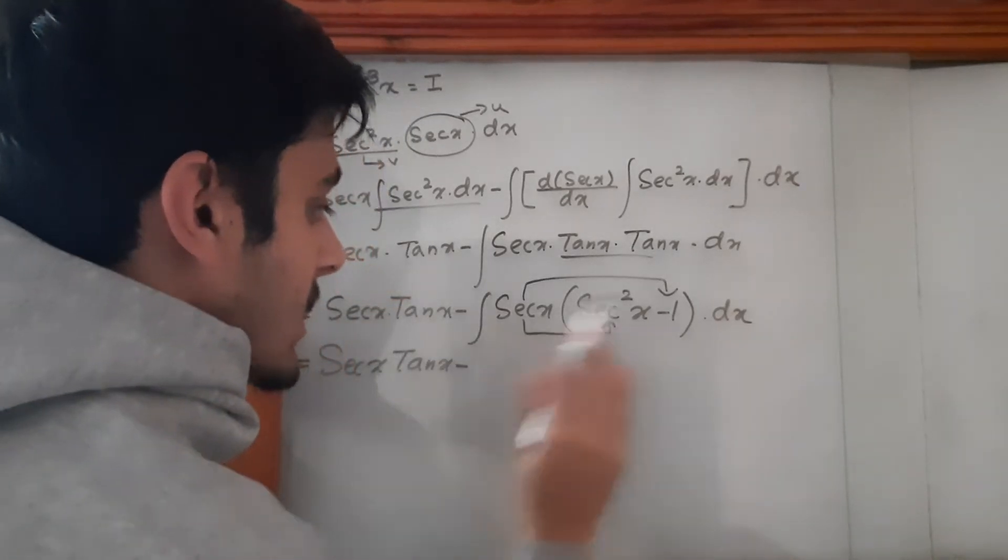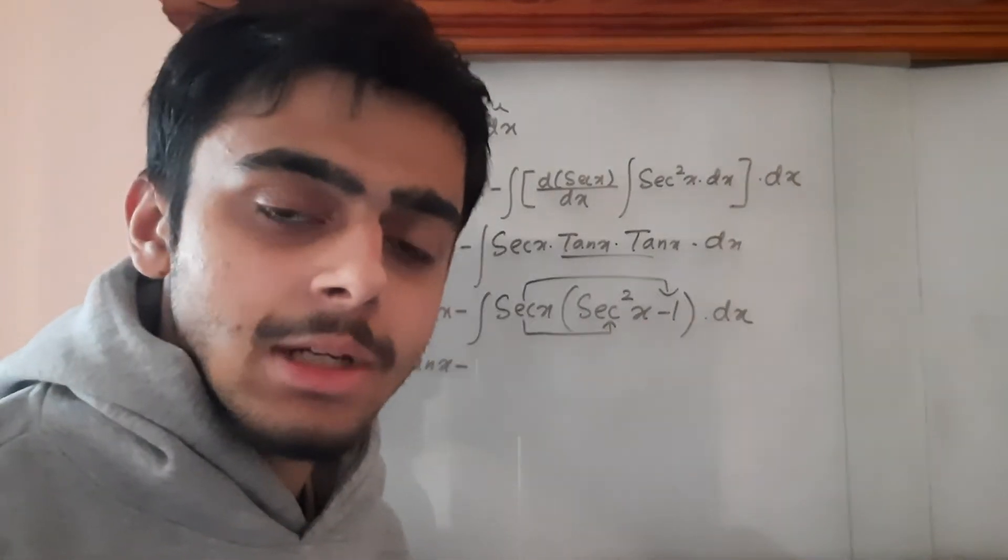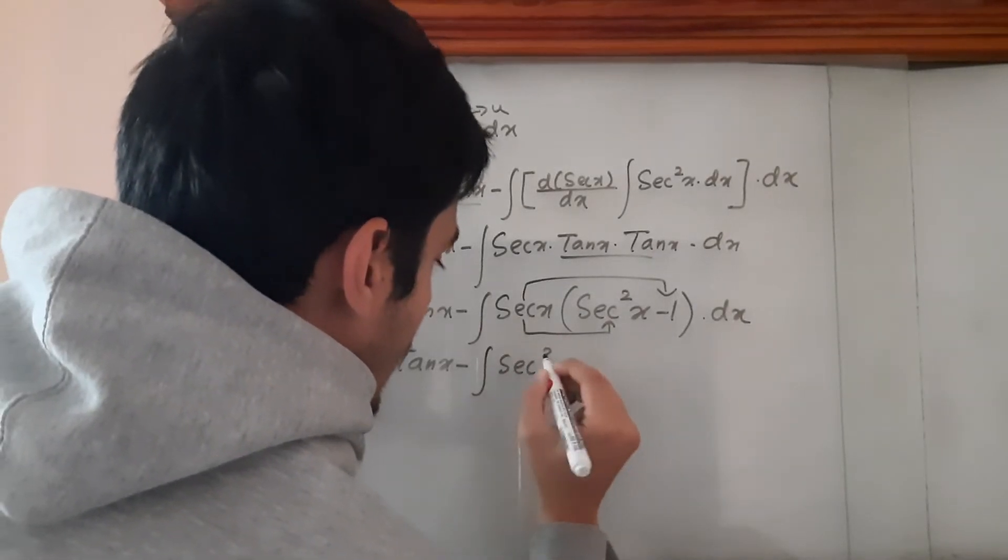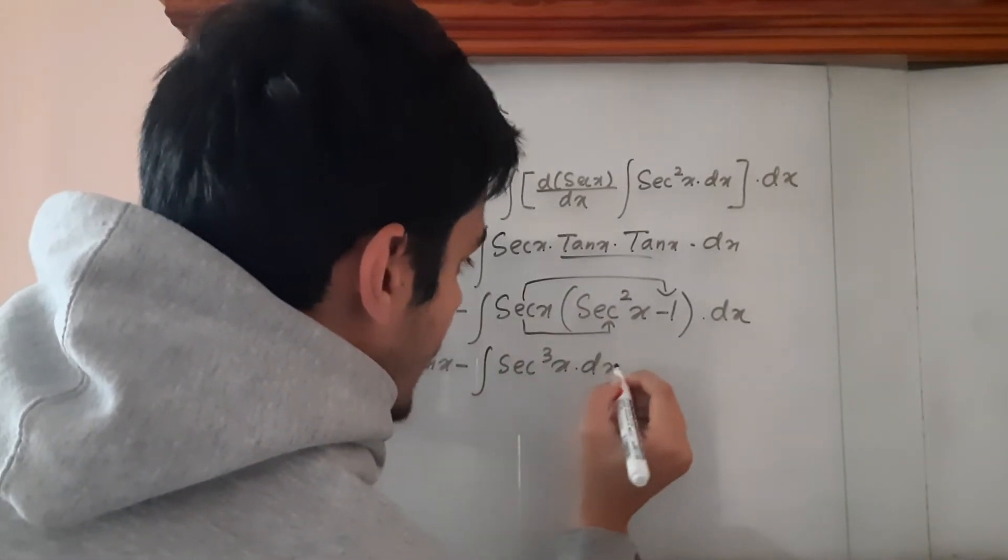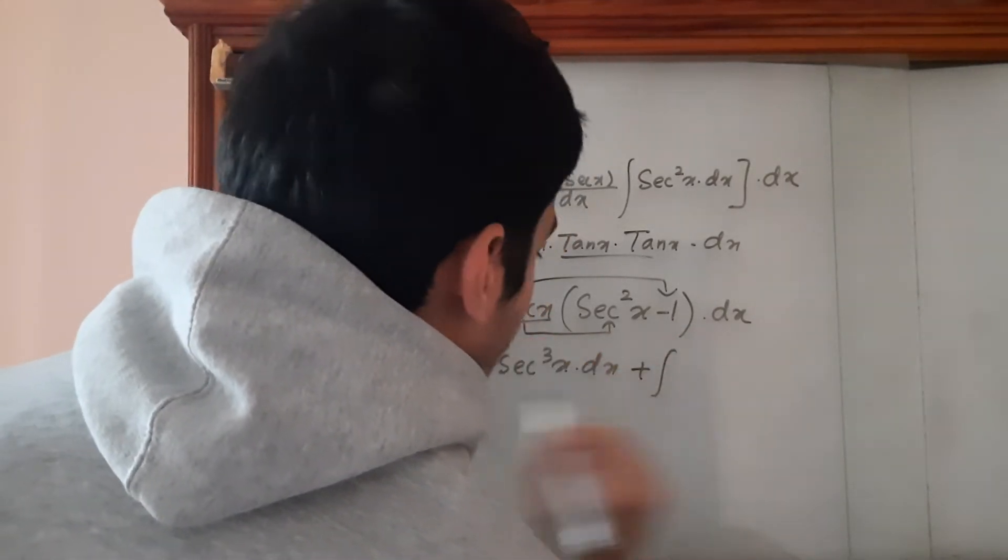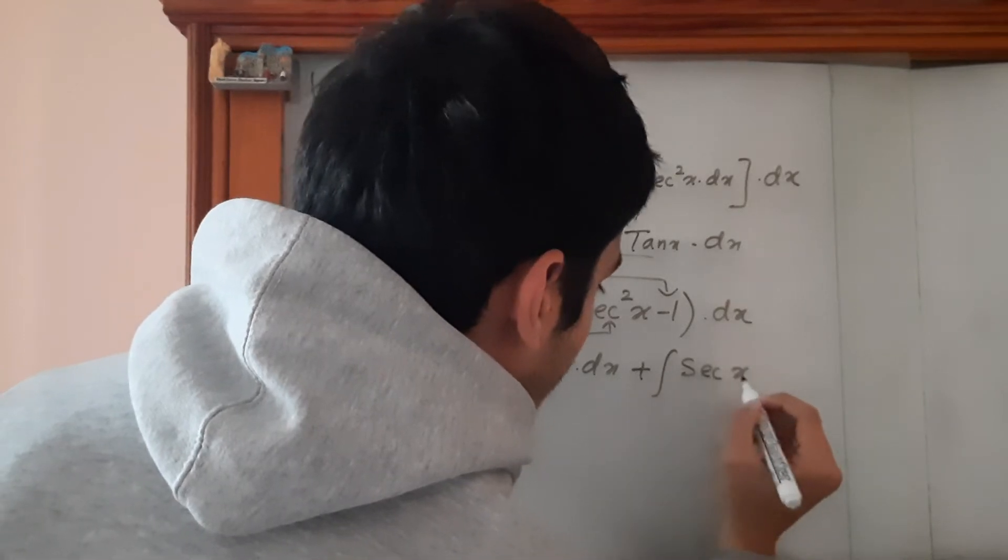Now let's separate these integrals. So I = secx·tanx - ∫sec³x dx + ∫secx dx.